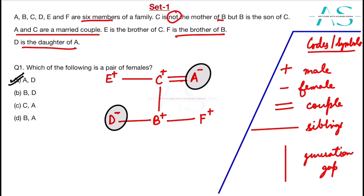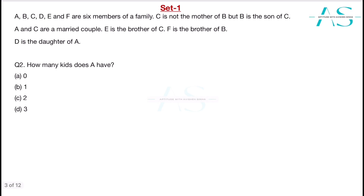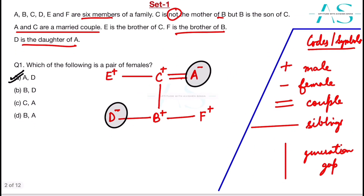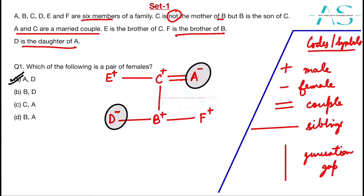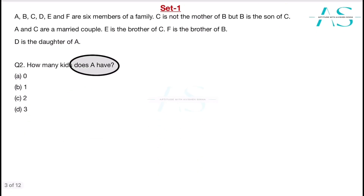The next question uses the same setup: how many kids does A have? A is the mother. Counting the children — B, F, and D — that gives us three kids. The answer is three.